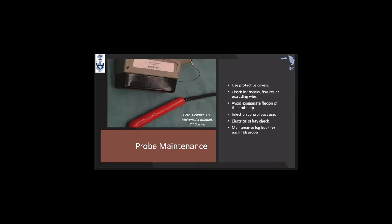Probe maintenance: it is recommended to use protective covers for the electrical connector and the tip of the probe. Before inserting the probe, check for breaks, fissures, or extruding wires due to electrical safety risk. Avoid exaggerated flexion of the probe tip as this can damage the esophagus or stomach. Infection control is required after use, and an electrical safety check is needed if you see any fissures, breaks, or extruding wires. It is also recommended to keep a maintenance logbook for each TEE probe.